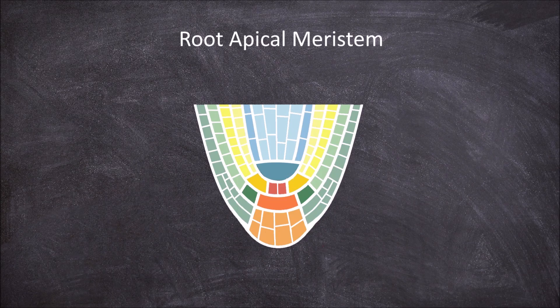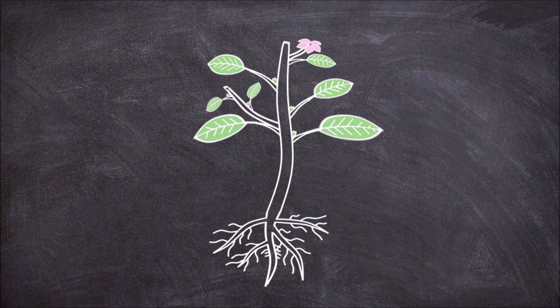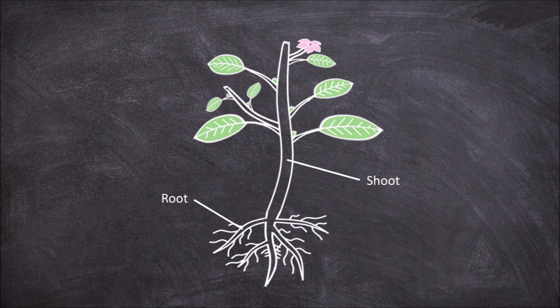In this video we're going to look at the structure of the root apical meristem. Meristems are areas of undifferentiated tissue found in the growing areas of the plant such as in the shoots, roots, and flowers.